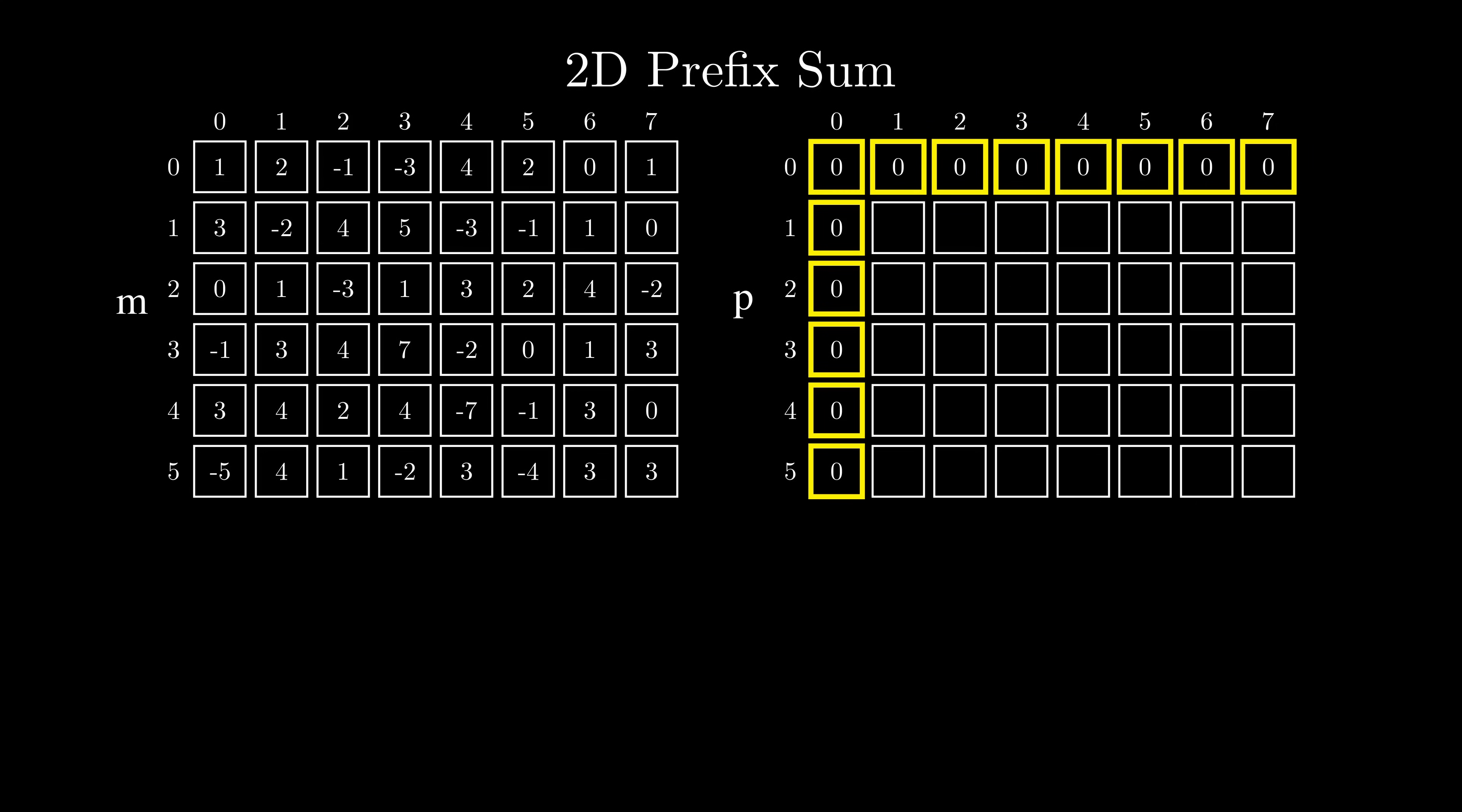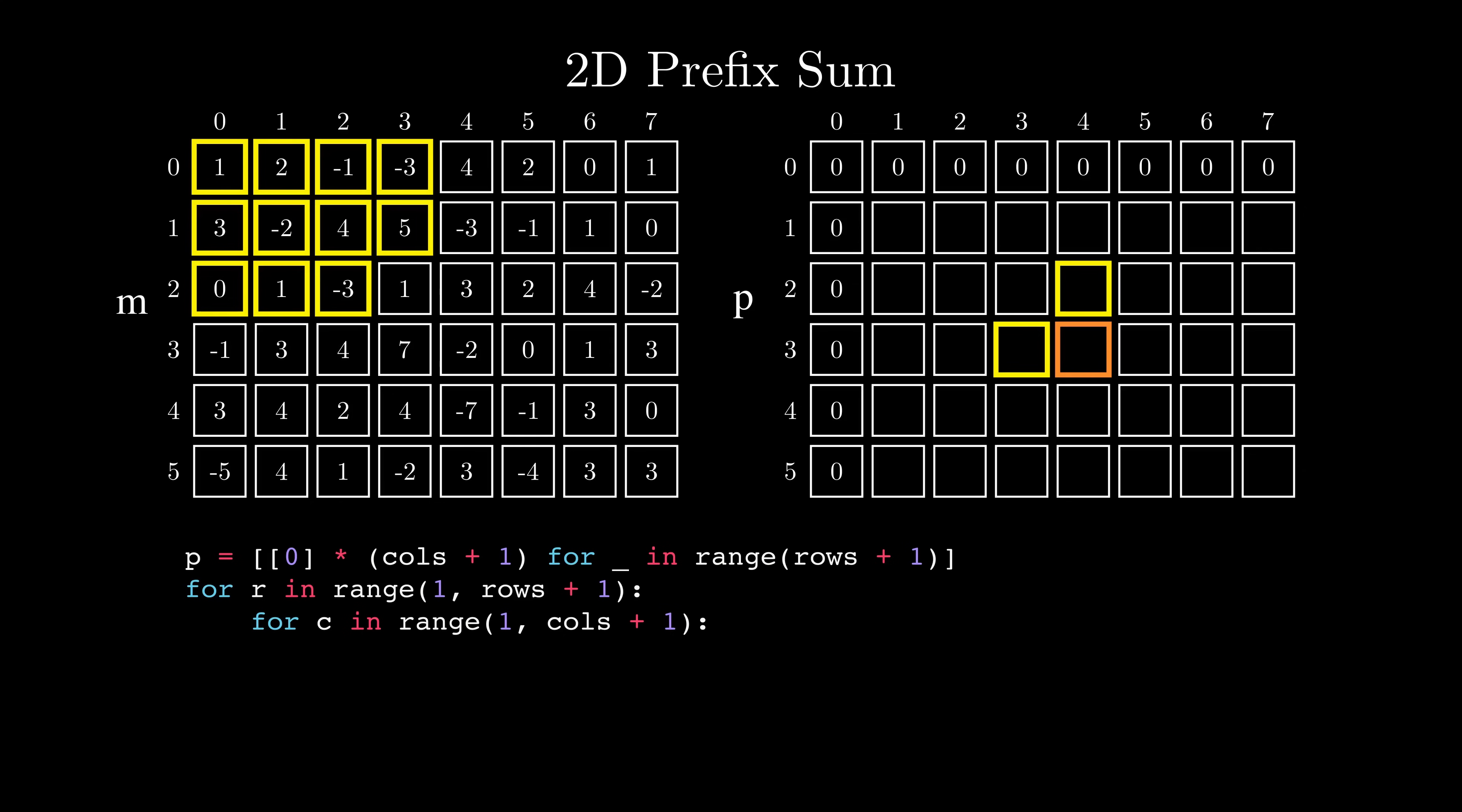When implementing this, we can initialize all the values of the prefix sum with zeros, then loop through all the rows and all the columns, excluding the padded ones, and try to calculate the prefix sum for each cell. So at any current location, if we have all the previous values calculated, we can obtain the value of the prefix sum very similarly to how we would answer queries. We can add the value of the upper rectangle and the rectangle on the left while getting rid of the double counting by subtracting the upper left rectangle and finally adding the current value of the array.